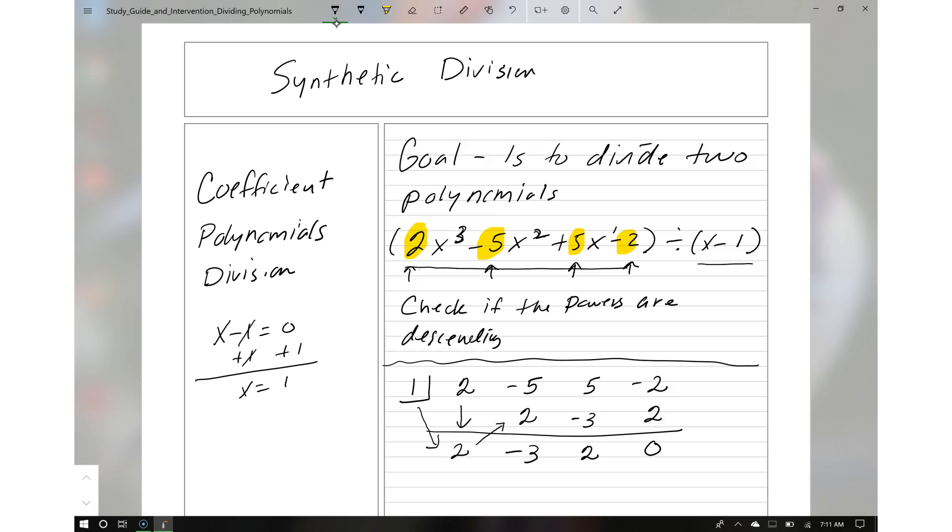Now you notice that the degree, that's another term that we're going to be reviewing. The degree is 3. That means that's the highest exponent. When we divide, it's going to go down 1 degree. So for example, 2x cubed minus 5x squared plus 5x minus 2 divided by x minus 1 is going to give you 2x squared minus 3x plus 2.